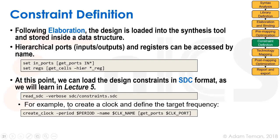For example, the basic command we're going to use is create_clock, which creates the clock and defines the frequency of the clock with the period parameter, the name of the clock, and which port the clock is actually driven through into the design.